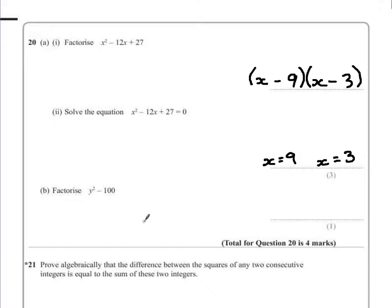Part B says factorize y squared subtract 100. Now there's no multiple of y in the middle there, so this one becomes again a very easy one if you can remember the pattern.